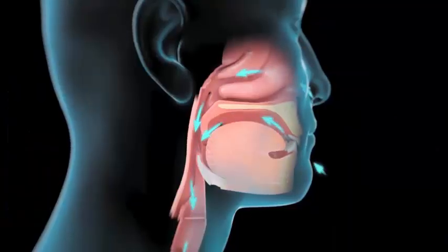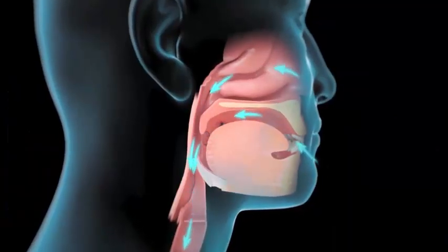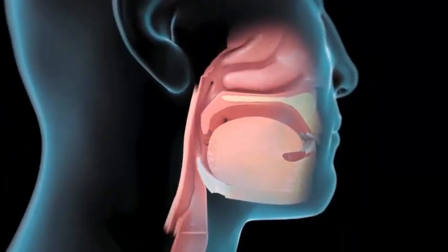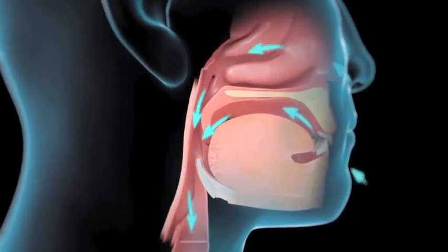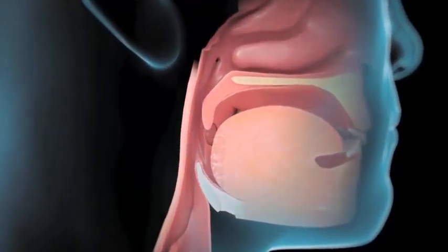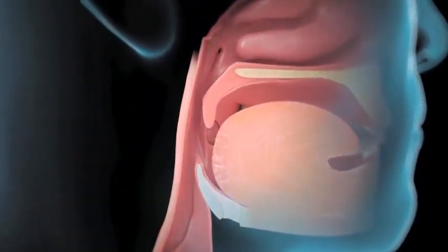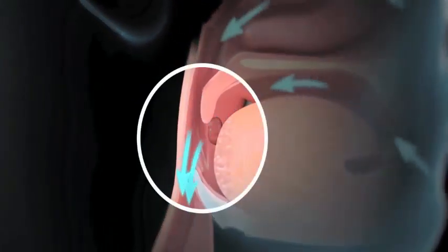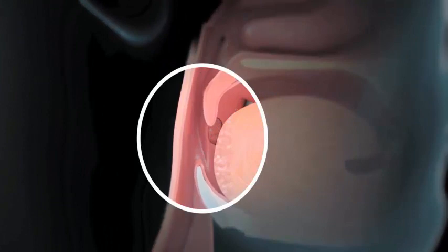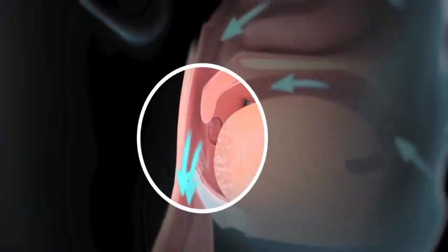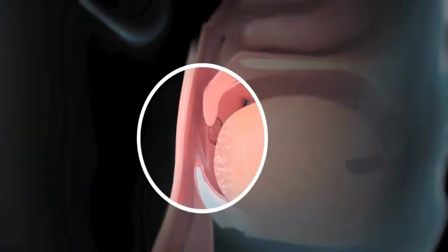Each time you breathe in, negative suction pressure pulls the soft tissues in your mouth and pharynx inward. The muscles in your pharynx respond by pulling the soft tissues outward again, which keeps your airway open.